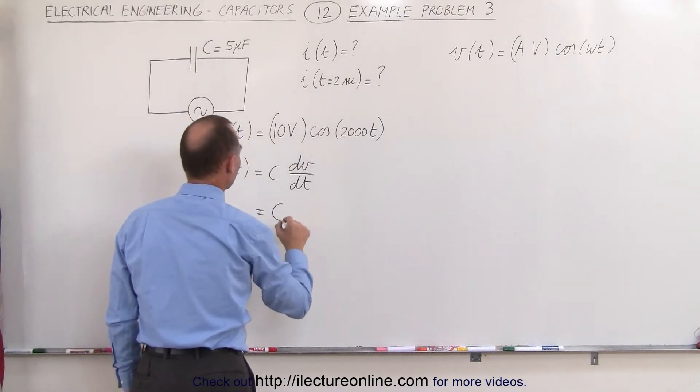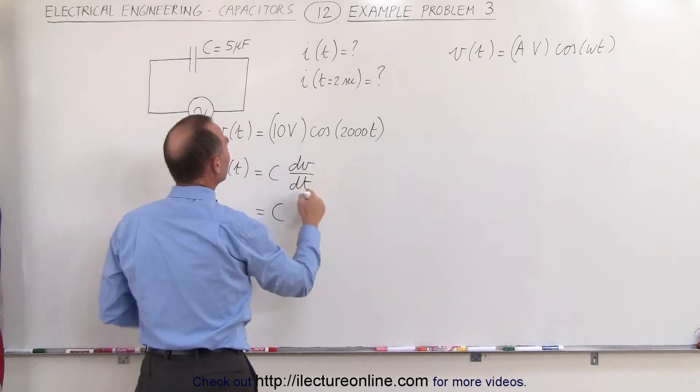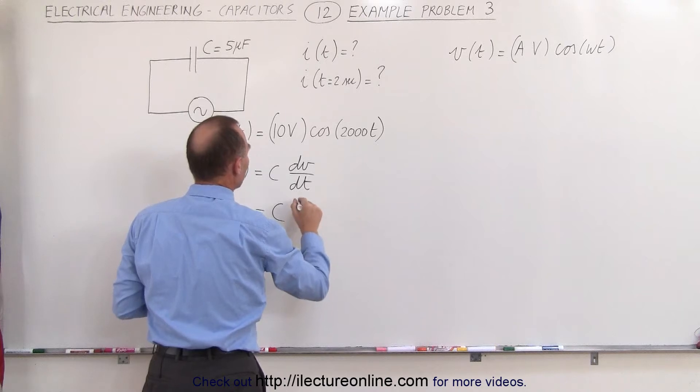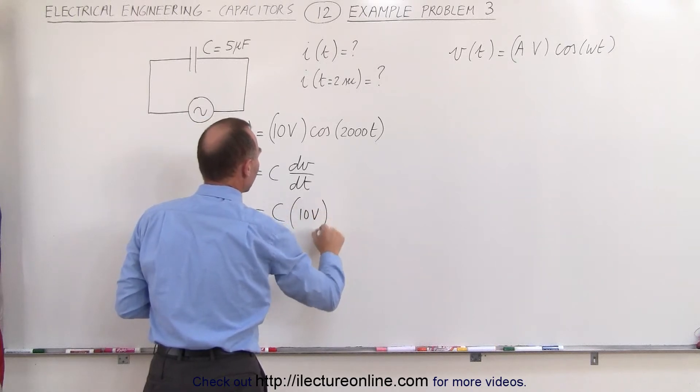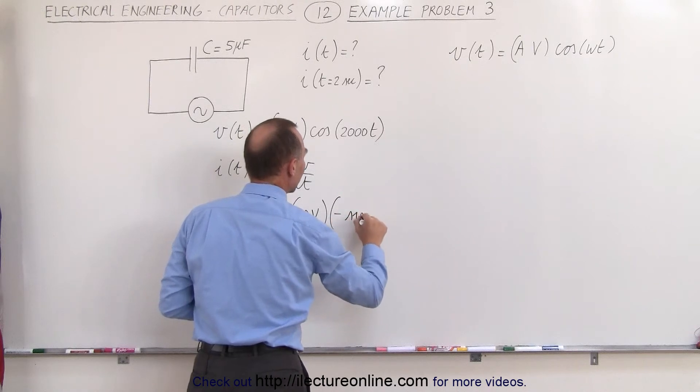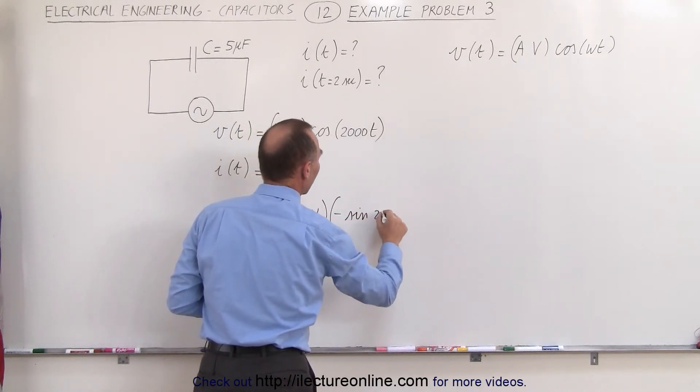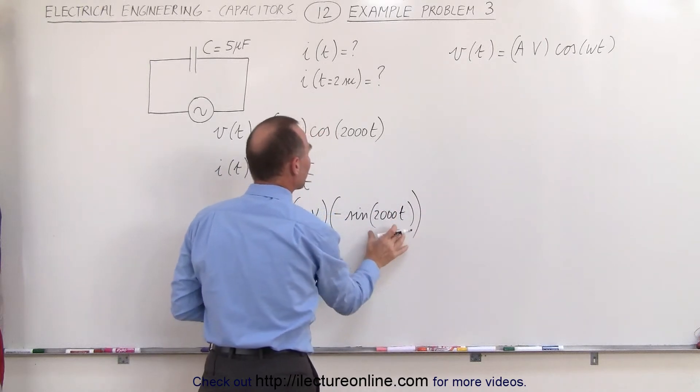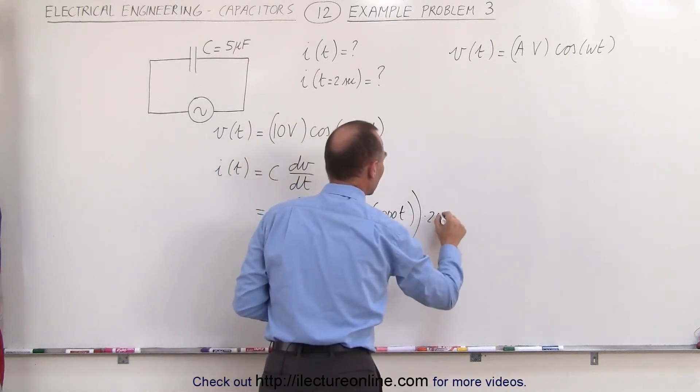This is equal to the capacitance times dv/dt, the rate of change of this equation with respect to time. That would be equal to 10 volts times the derivative of the cosine, which is the negative sine of 2000 times t, times the derivative of the angle, which would be times 2000.